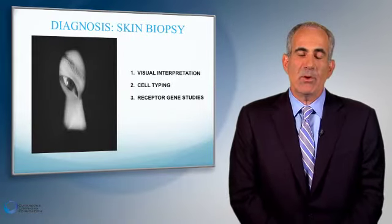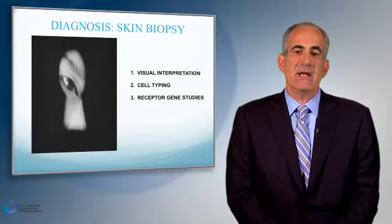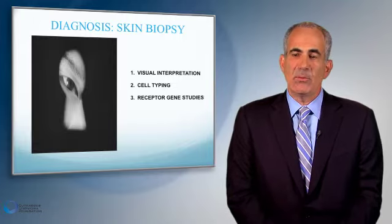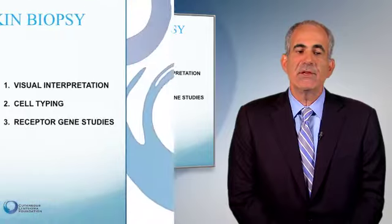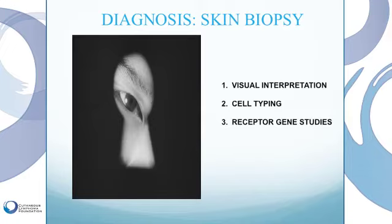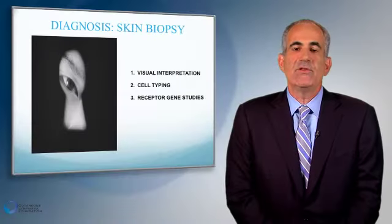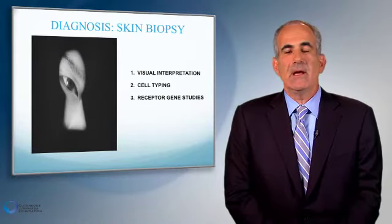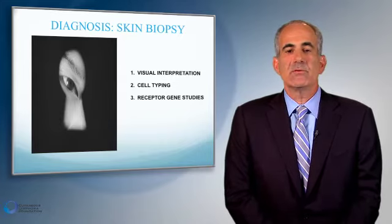I want to talk about an important concept that is difficult for most people to grasp: the skin biopsy and how it is interpreted and how it is important for the diagnosis of cutaneous lymphomas. I like to analogize a skin biopsy as looking through a keyhole. We take a piece of skin, we section it, we send it to the pathologist, and they look at that glass slide and see different features — just like one looks through a keyhole and can see a person with certain colored clothing, maybe certain colored hair, and can identify that individual, but can't say anything definitive about what they see.